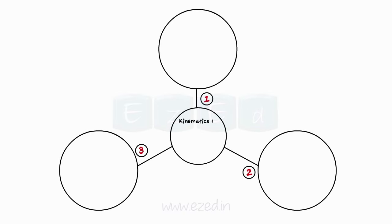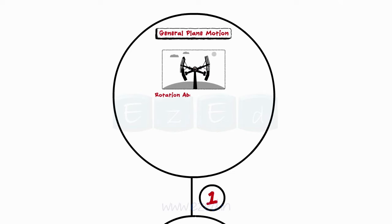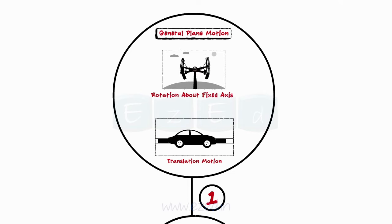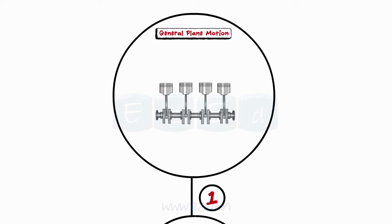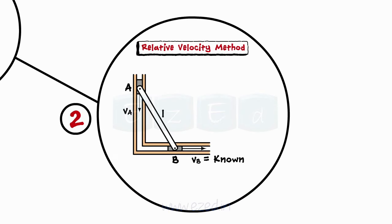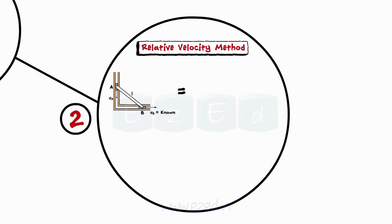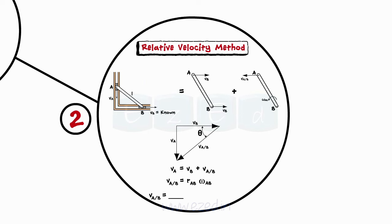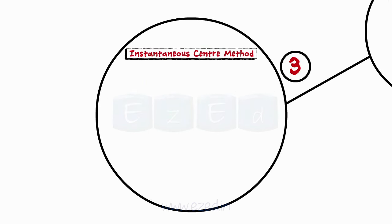Let's take a quick overview of this Easy Ed video lecture. We have seen that any plane motion which does not fall under the category of rotation about fixed axis or translation motion is a general plane motion — a combination of translation and rotation. We covered the relative velocity method to determine angular velocity of a body in general plane motion, worked through a three-bar example, and then defined the instantaneous center as the point about which the body rotates at a given instant, applying it to find angular velocity and velocity using the perpendicular intersection method.